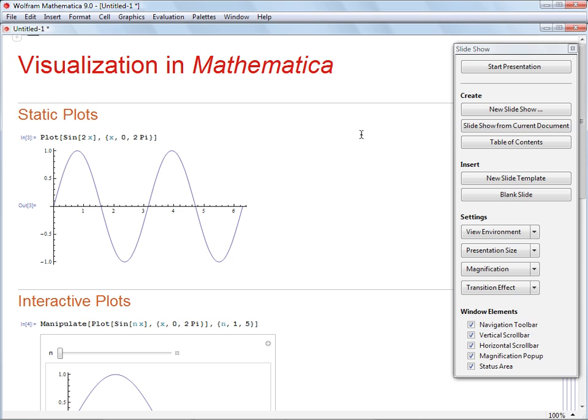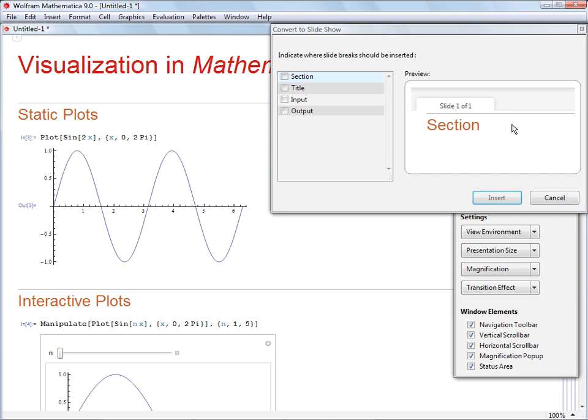You can also use the Slideshow Palette to turn an existing notebook into a slideshow. Open your notebook and click the Slideshow from Current Document button on the palette. A small window pops up that lets you choose the cell styles that Mathematica will use to create slide breaks.